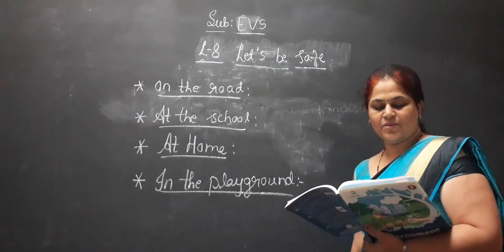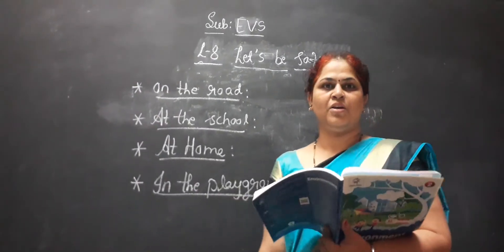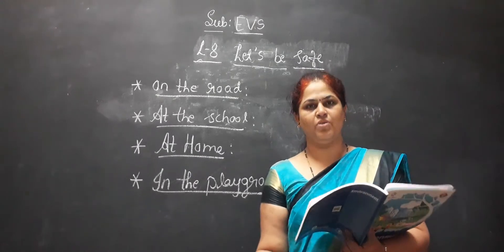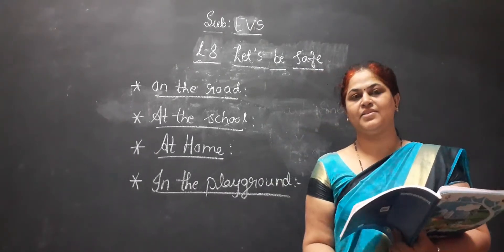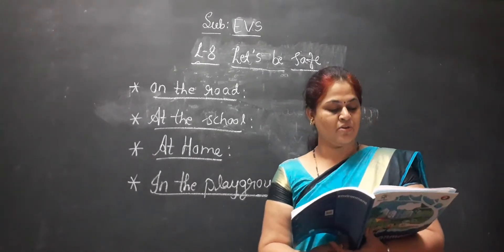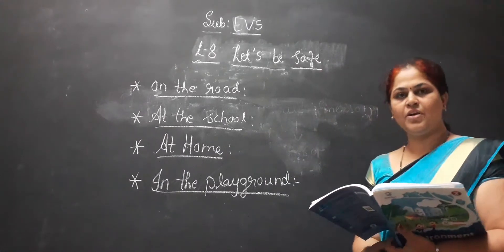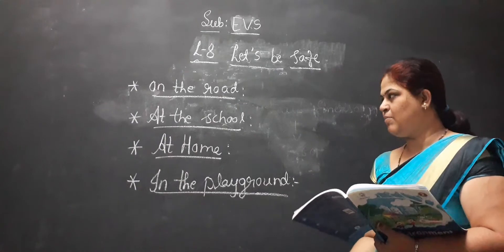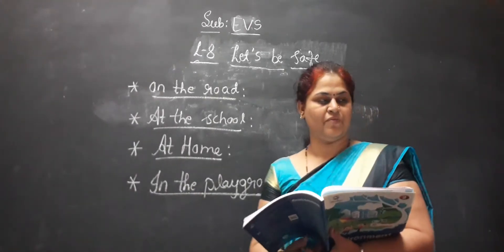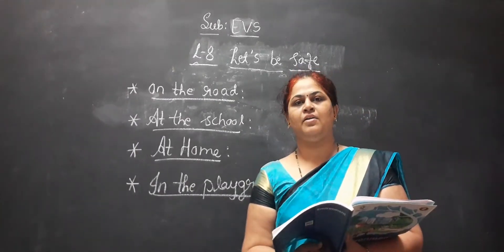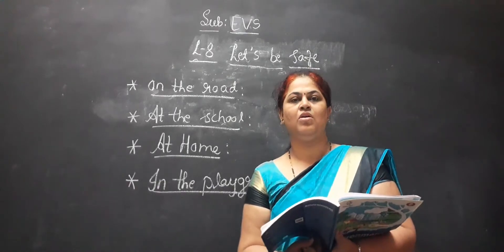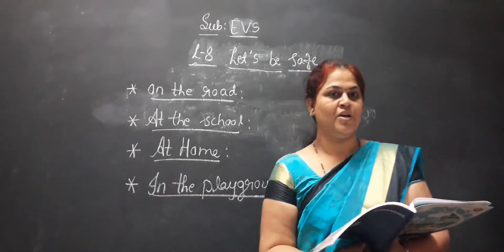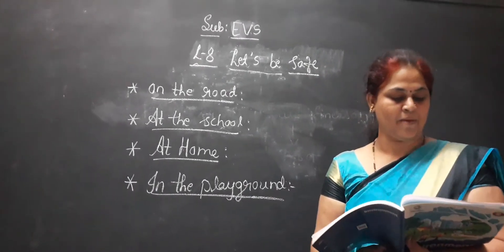So how we have to be safe? On the road, whenever we are going on the road, some accidents will happen. We have to be careful because of our carelessness only the accidents will happen. It may cause injury for you people, physical injury like hand will broke or leg will broke. Physical injuries will happen.